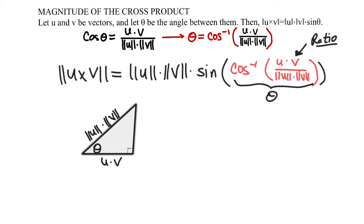If I want to find the sine, I would need the opposite side, so I would use the Pythagorean theorem. Because u dot v is a scalar and magnitudes themselves are scalars, we can actually label a triangle with this information.